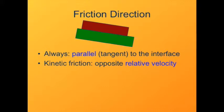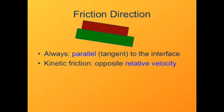With kinetic friction, the direction on an object is to always oppose sliding between the two objects. So whatever direction they're moving relative to each other, that's the direction that friction is going to oppose for either object.